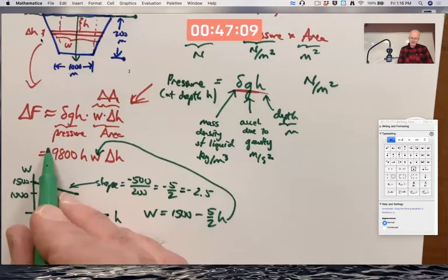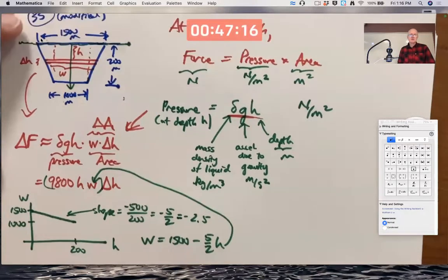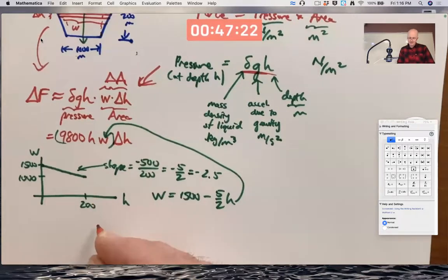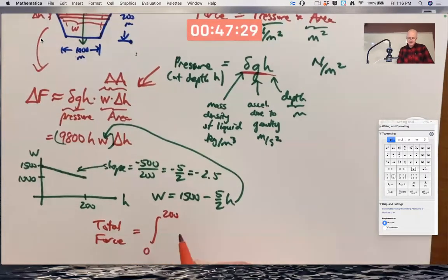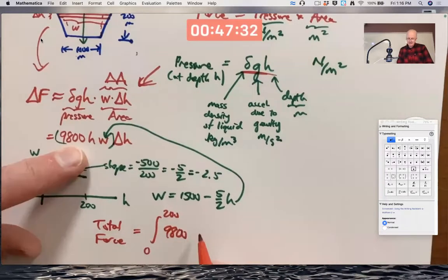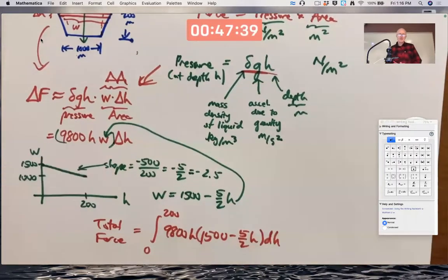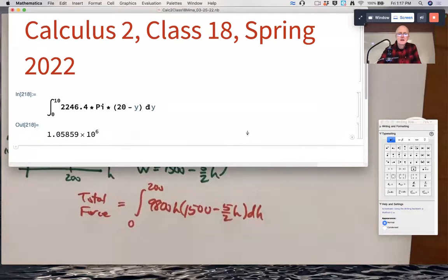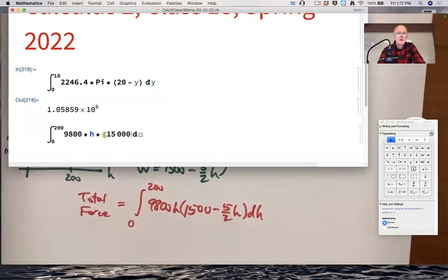And then this part will be the function that you integrate as H goes from 0 to 200. So the integral to do is the total force on the dam is the integral from 0 to 200 of 9,800 H times W, which is in parentheses, 1,500 minus 5 halves H DH. An integral that can certainly be done by hand, but let's save time by using Mathematica.